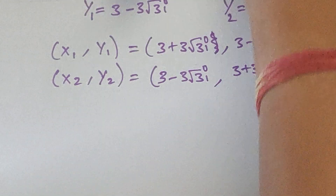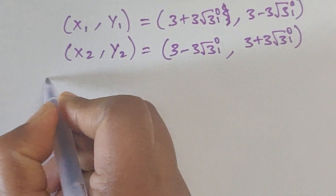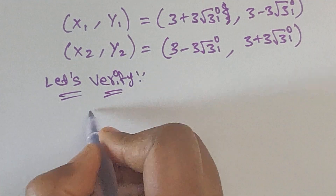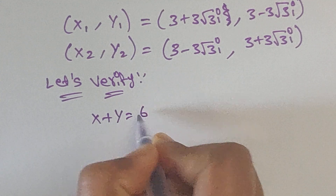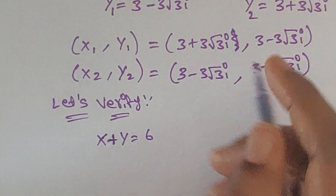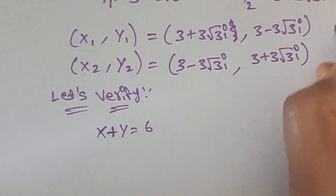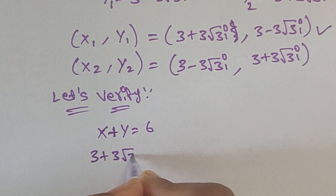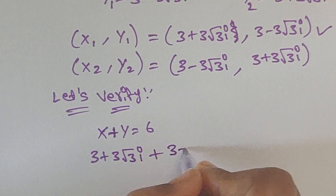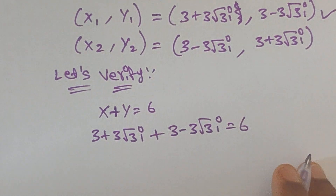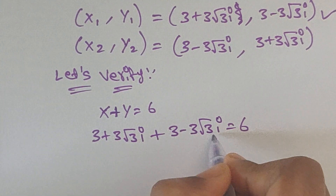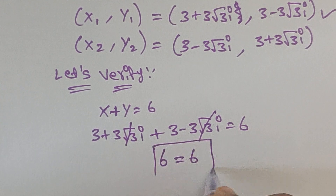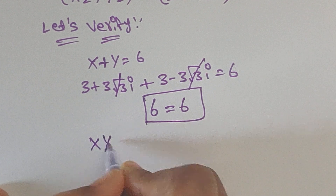Now let's verify whether these values are correct. Checking equation 1, x plus y equals 6, using x1 and y1: (3 plus 3 square root of 3i) plus (3 minus 3 square root of 3i) equals 6. The imaginary terms cancel, and 3 plus 3 equals 6. So 6 equals 6, which is true.